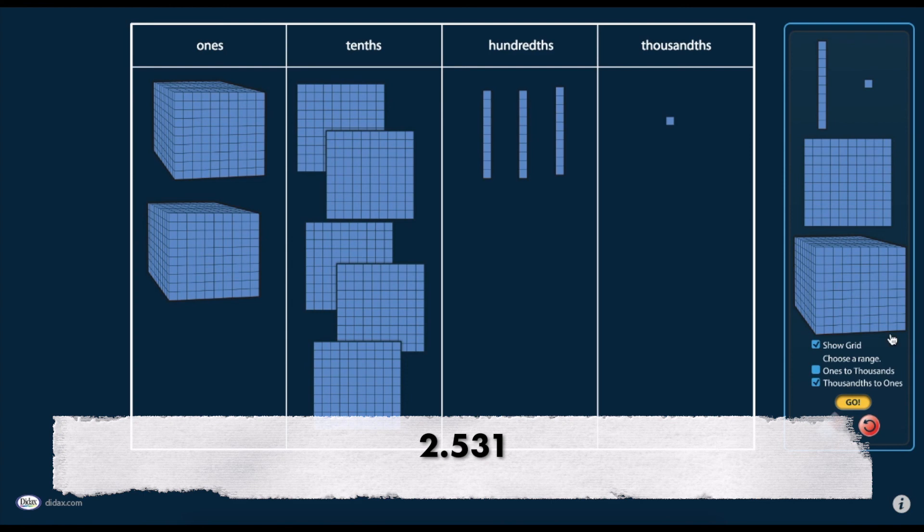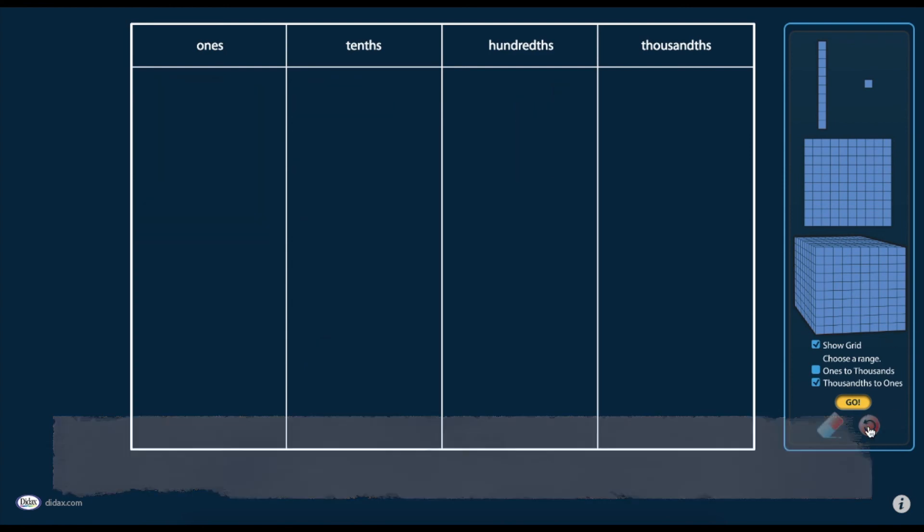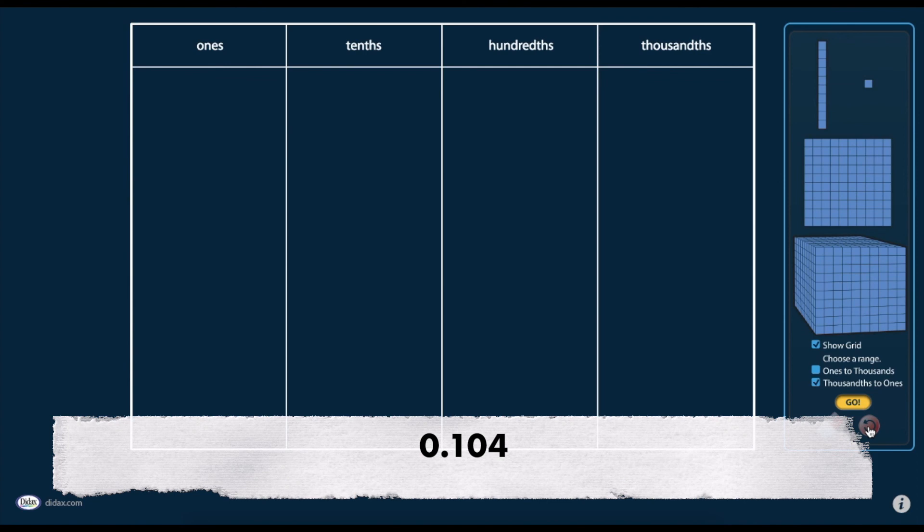Let's clear our mat and try another example. Let's create a model for this decimal number. This time we have zero ones, so we're not going to put anything in the ones place. We do have one tenth. We don't have any hundredths, so we're not going to put anything in our hundredths place, and four thousandths.